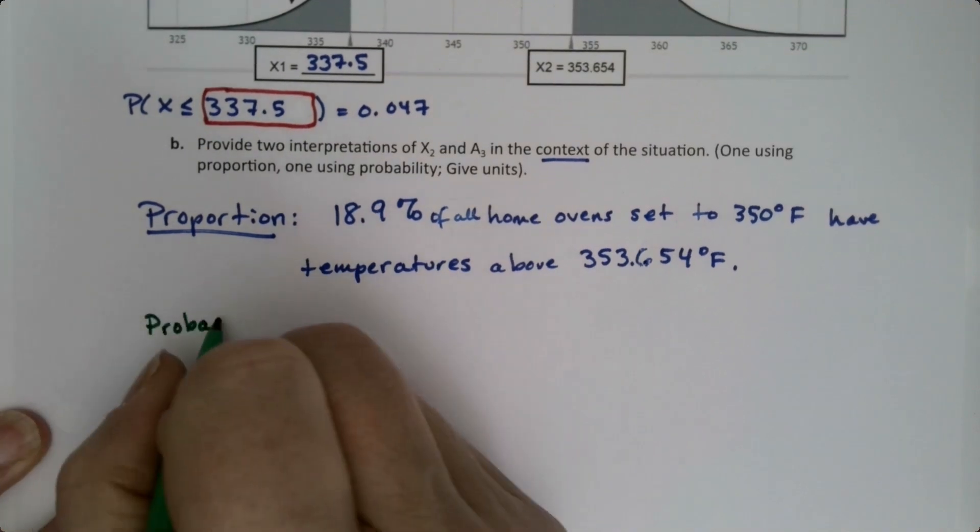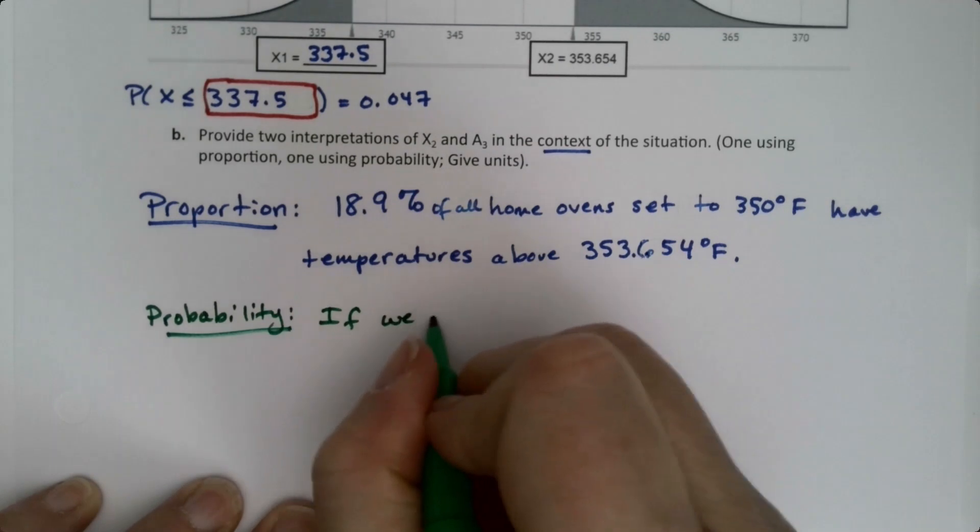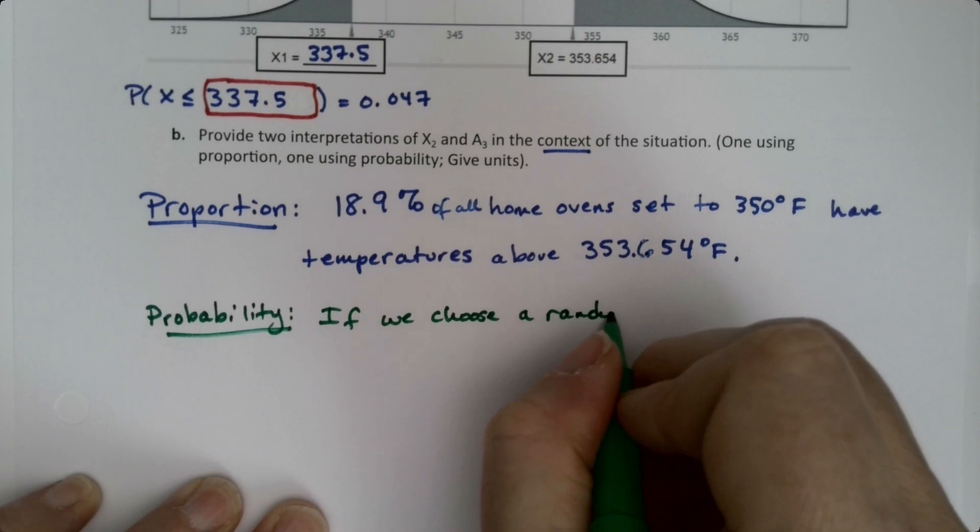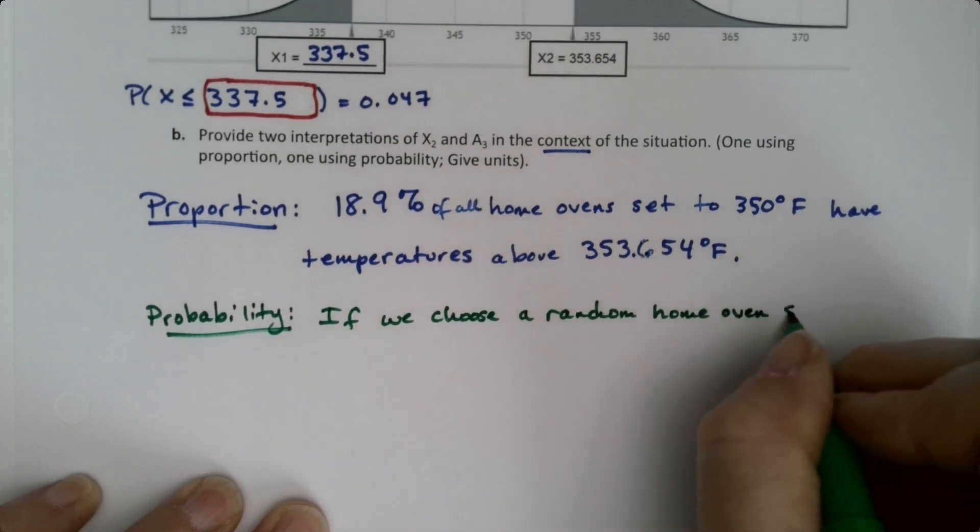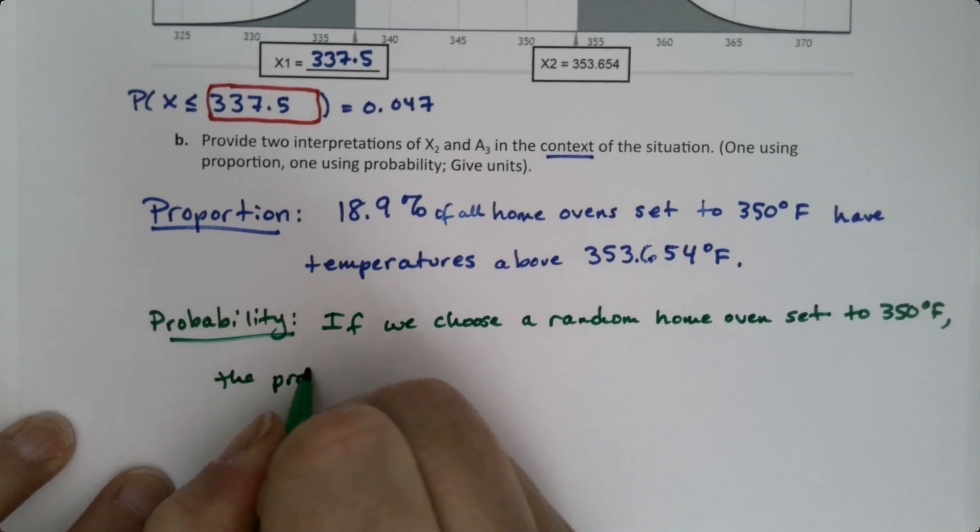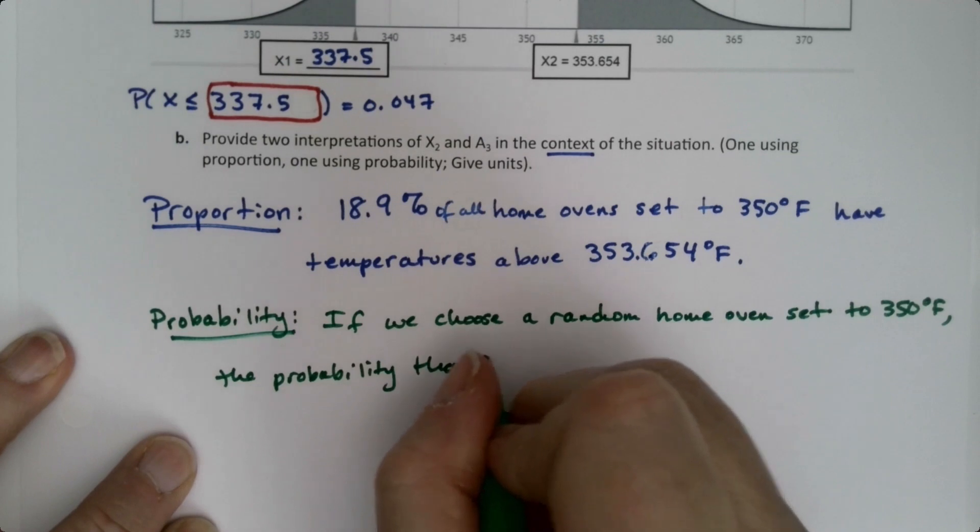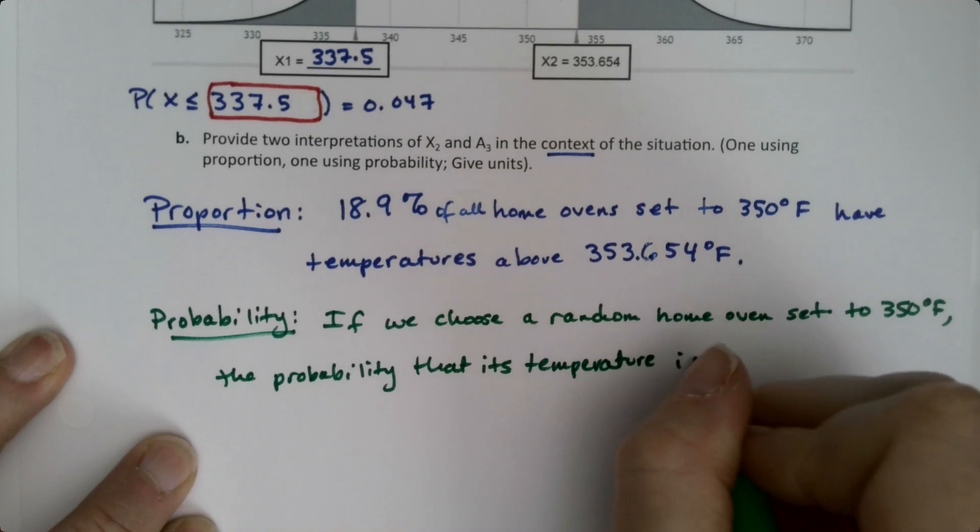Okay, so that's the proportion way. Remember we learned this at the end of section 7.1. So probability—that's saying if we choose a random home oven set to 350, the probability, the chances, that its temperature is above 353.654 degrees Fahrenheit